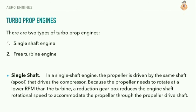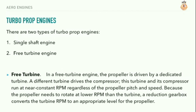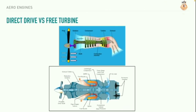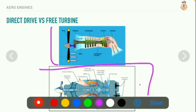In a single shaft engine, the propeller is driven by the same shaft that drives the compressor. Because the propeller needs to rotate at a lower RPM than the turbine, a reduction gearbox reduces the engine shaft rotational speed to accommodate the propeller. In a free turbine engine, the propeller is driven by a dedicated turbine while a different turbine drives the compressor. This turbine and its compressor run at a near-constant RPM regardless of propeller pitch and speed. A reduction gearbox converts the turbine RPM to an appropriate level for the propeller. Here you can see the illustrations of the single shaft engine and the free turbine engine.